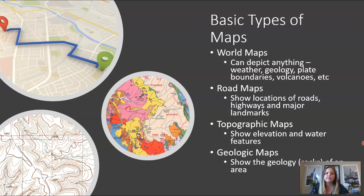So there are basic types of maps. Most of us are really familiar with things like Google Maps or Google Earth, which shows us the map of the world. So there are world maps that can depict anything — weather, geology, plate boundaries, volcanoes. Or there can be road maps, which is what most of us use, and that shows the location of roads, highways, and major landmarks.